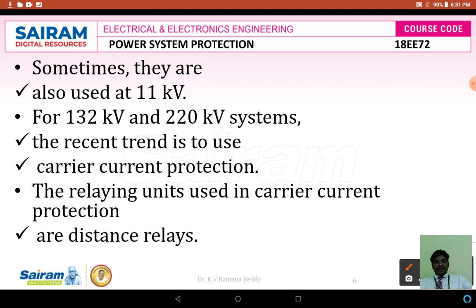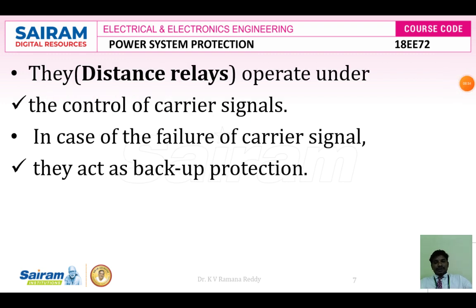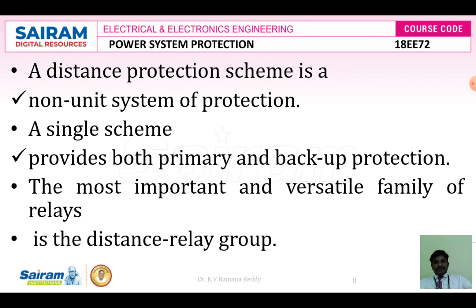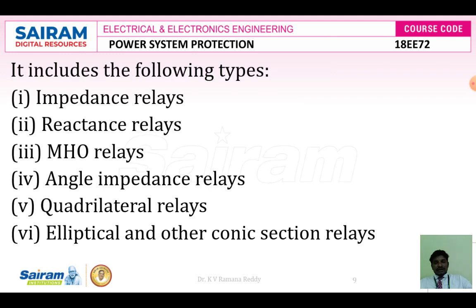The line parameters calculated between the fault location and the relay location — line impedance, reactance, admittance, and susceptance — are compared with the preset value. Distance relays operate under the control of carrier signals, and in case of failure of the carrier signal, they can act as backup protection using pilot protection. Distance protection is a non-zoned system of protection, so wherever the fault happens throughout the transmission line, a single scheme provides both primary and backup protection.